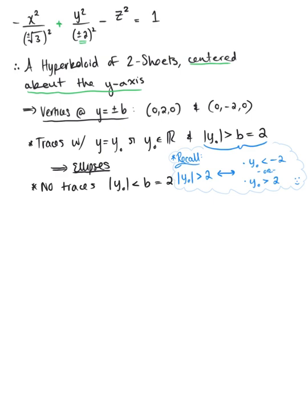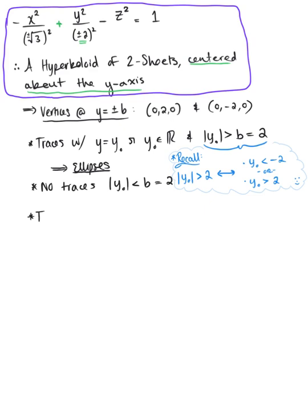So we've classified the surface and we have described some important features of this surface in relation to its axis of symmetry. So last but not least, what about traces associated with x and z? Let's recall that traces with x equal to x-not and or z equal to z-not such that x-not and z-not are real numbers, these traces are hyperbolas.